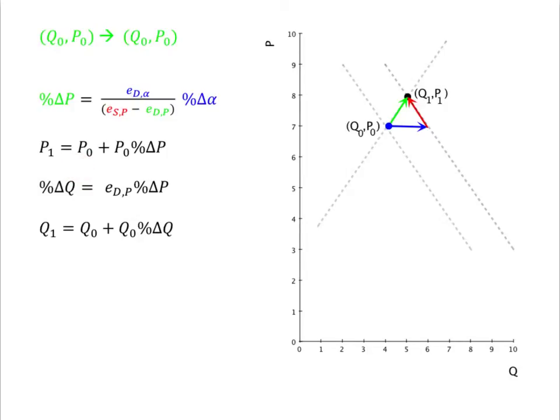Multiply the original price by the percentage change and add to the original price to find P1. The shift from Q0, P0 to Q1, P1 is a movement along the supply curve. So we find the percentage change in quantity by multiplying the percentage change in price by the own price elasticity of demand and use that to obtain the new quantity. Let's apply this approach to an example.